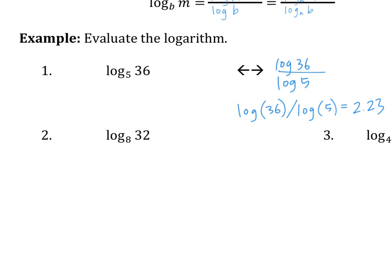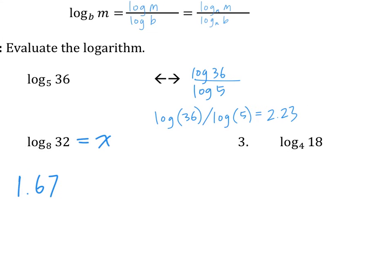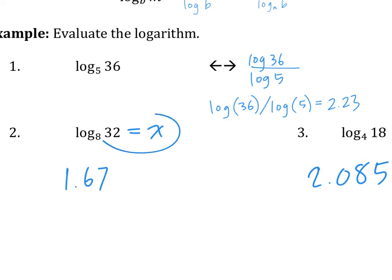Now it's your time to try problems two and three. Number two: about 1.67. Number three: 2.085. For number two, you could actually just use the loop rule and solve — not everything has to be solved using the calculator; you can use other ways.